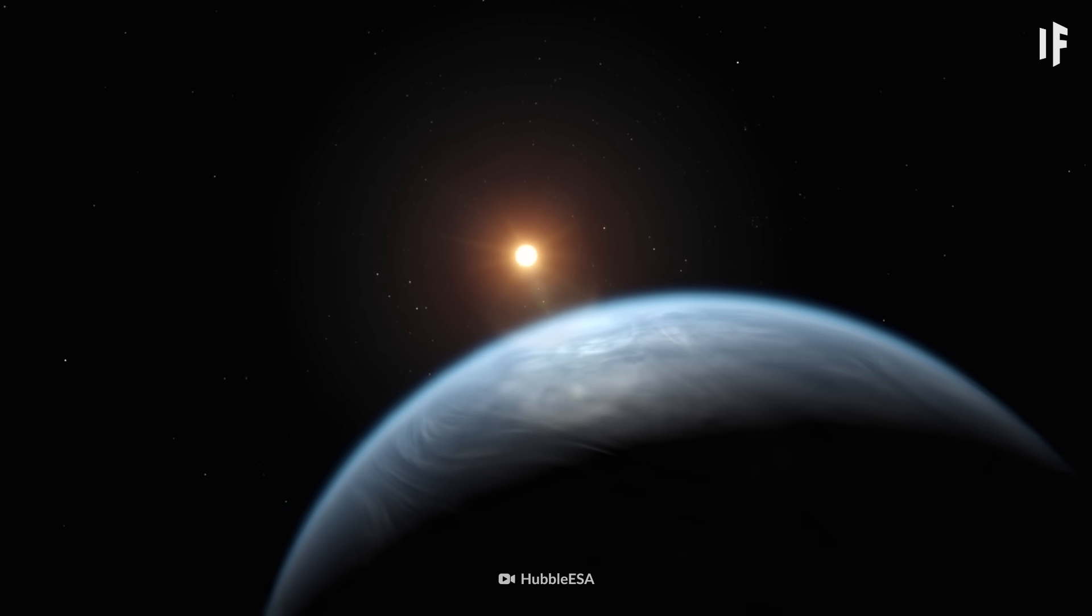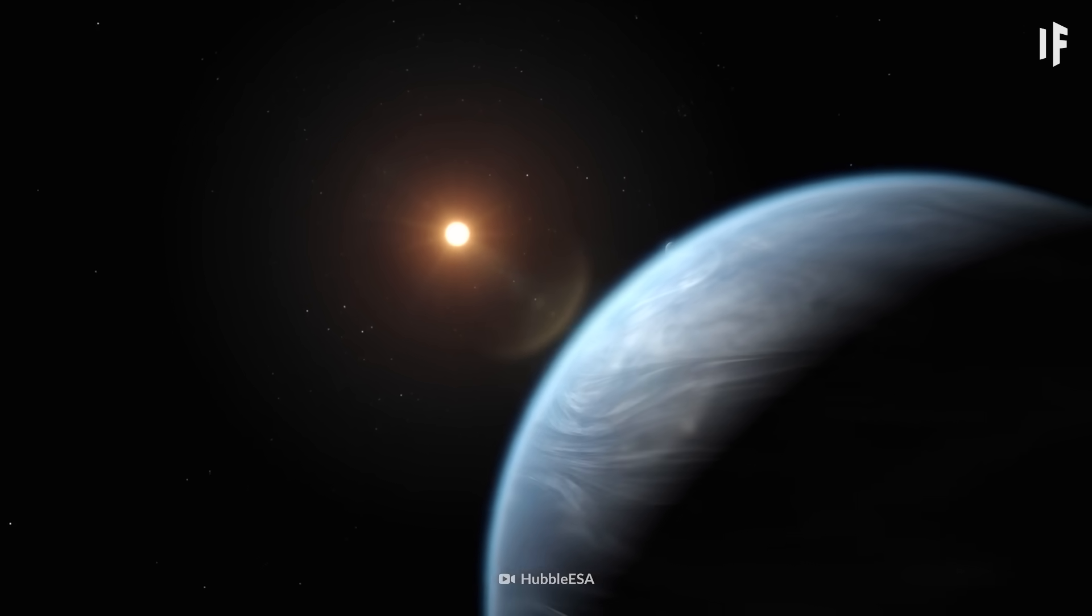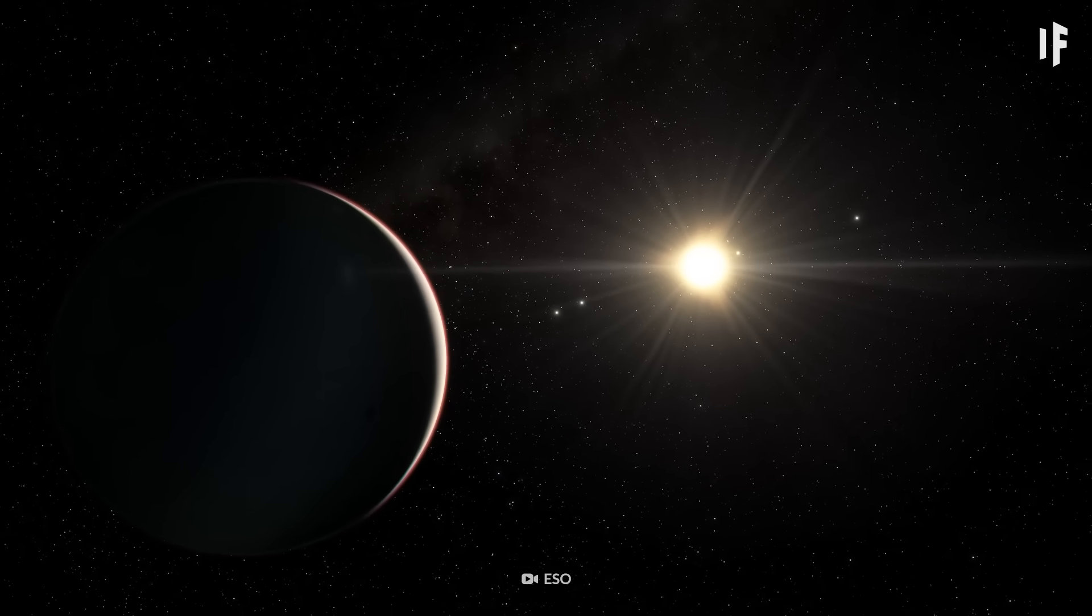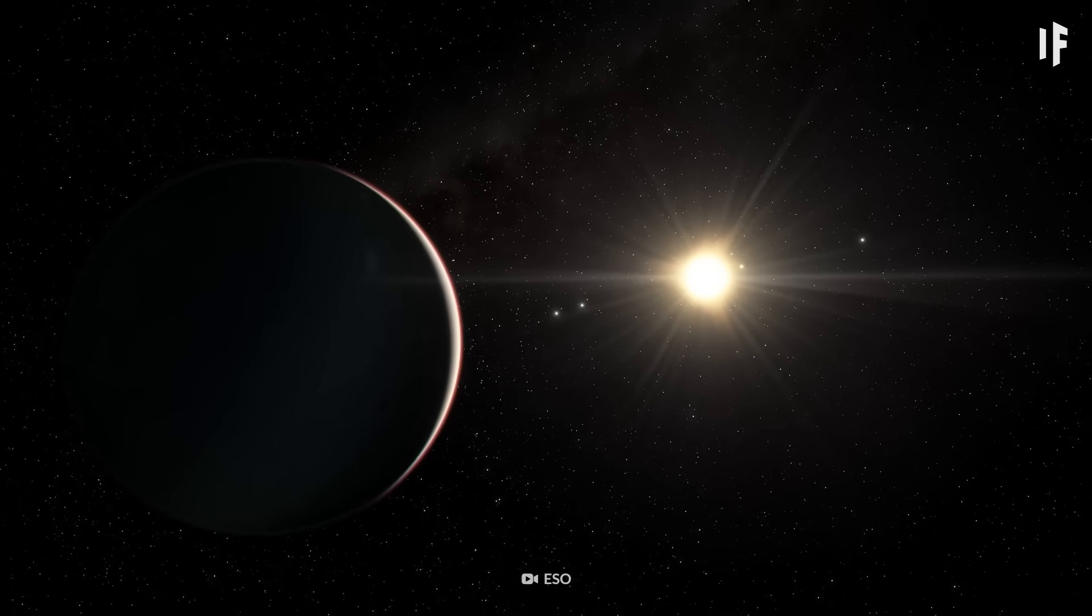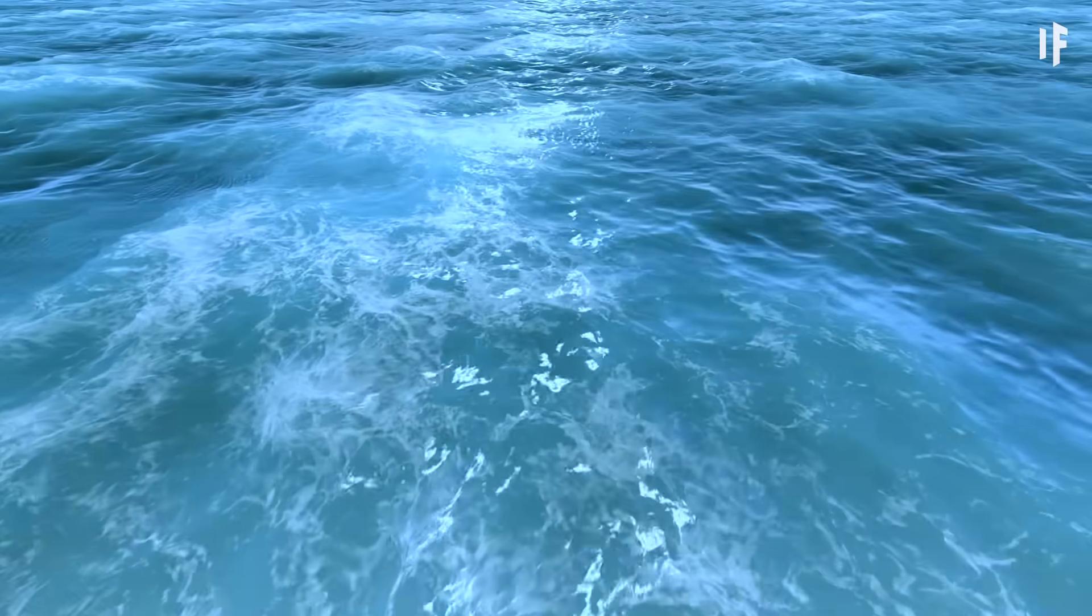And even though its star is cooler than ours, this fake Earth is still way outside its star system's habitable zone. That means no liquid water can exist on a planet's surface.